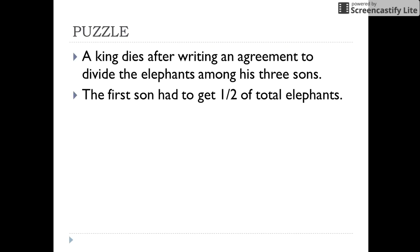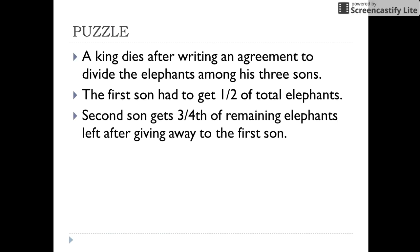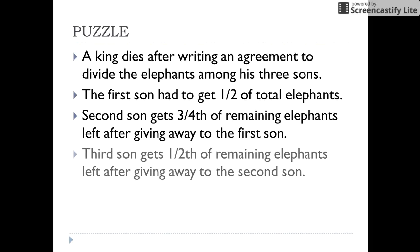According to the will of the king, the first son had to get half of the total elephants. The second son was to be given 3/4 of the remaining elephants after they were given to the first son. And the third son gets half of the remaining elephants after they have been divided among the first and the second sons.